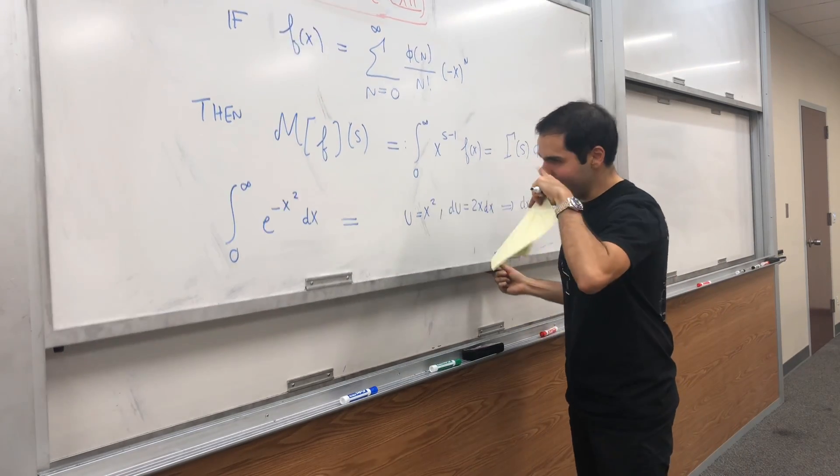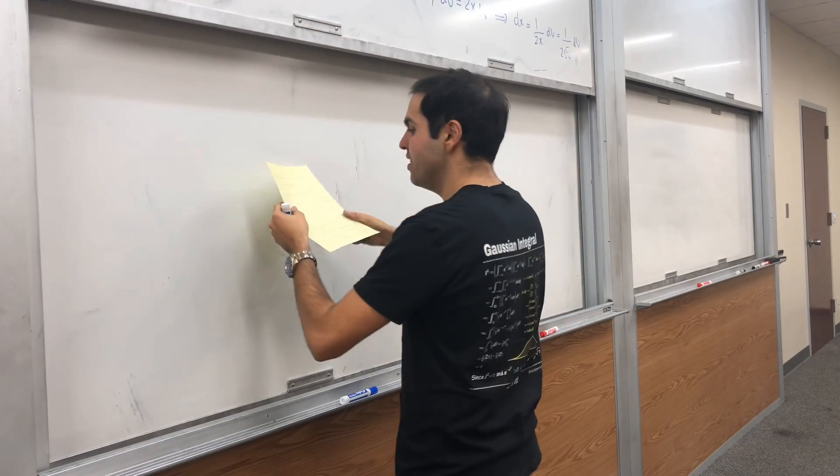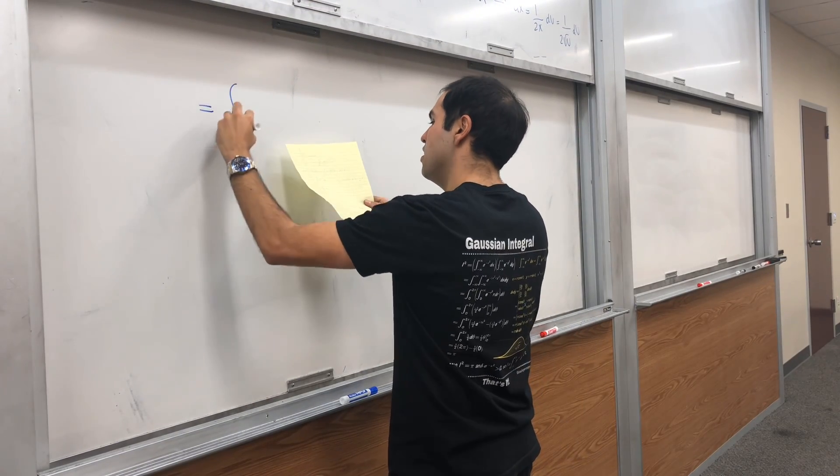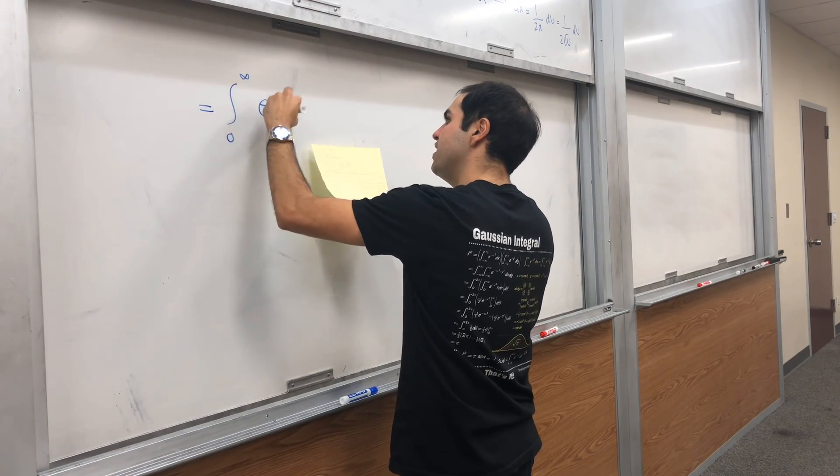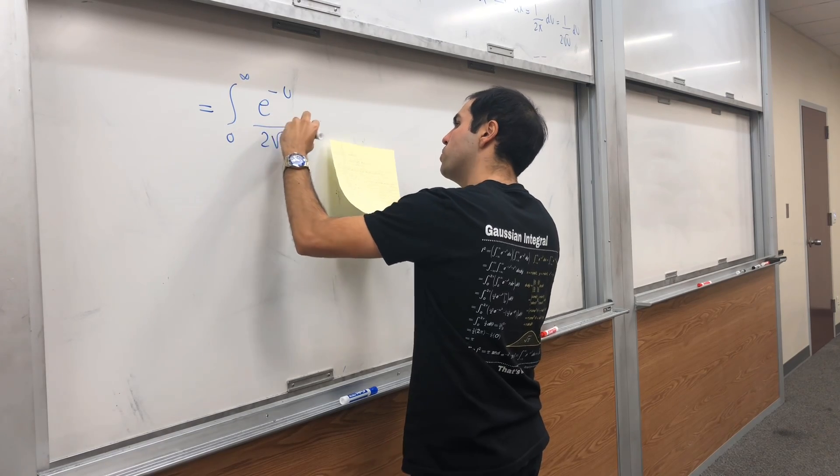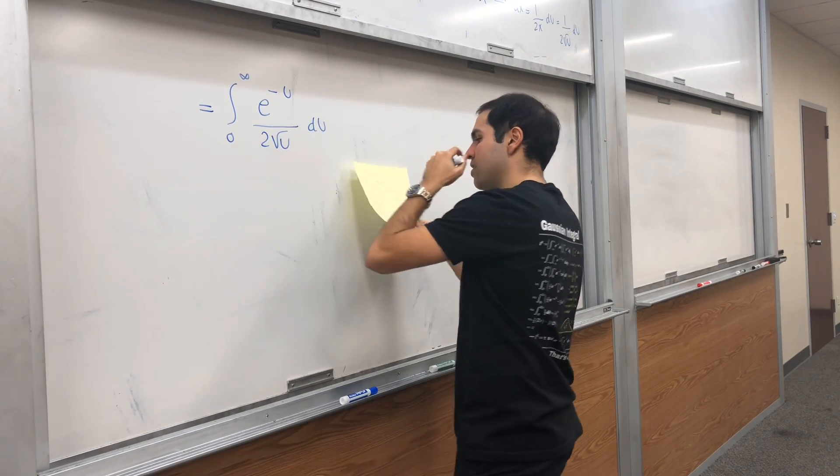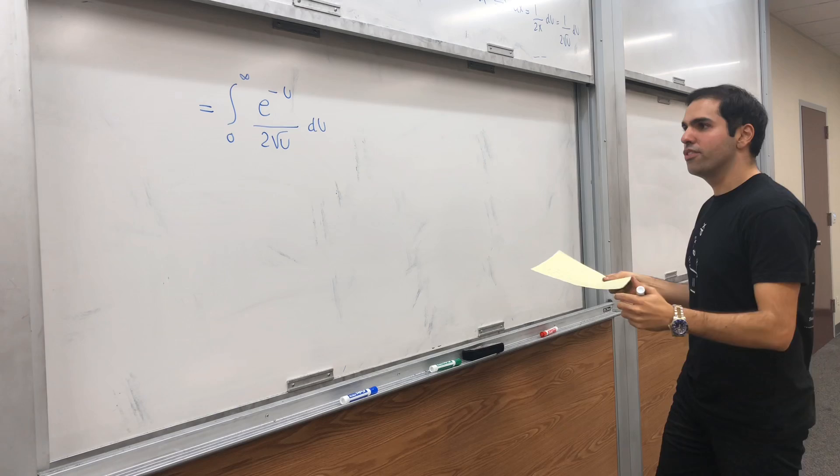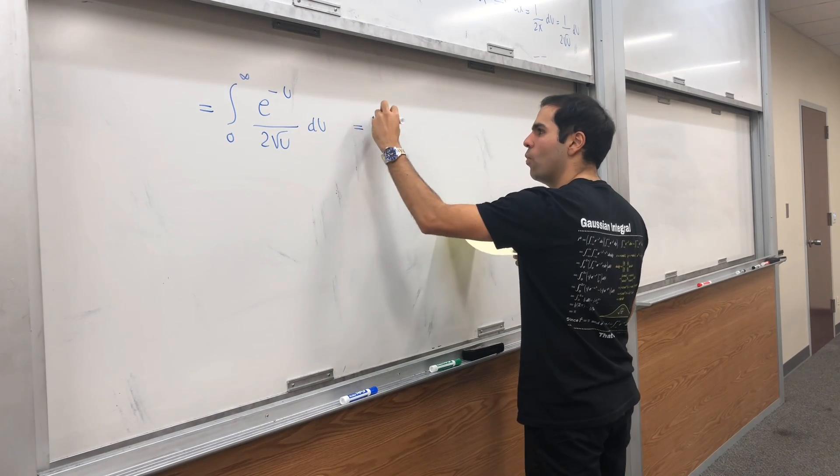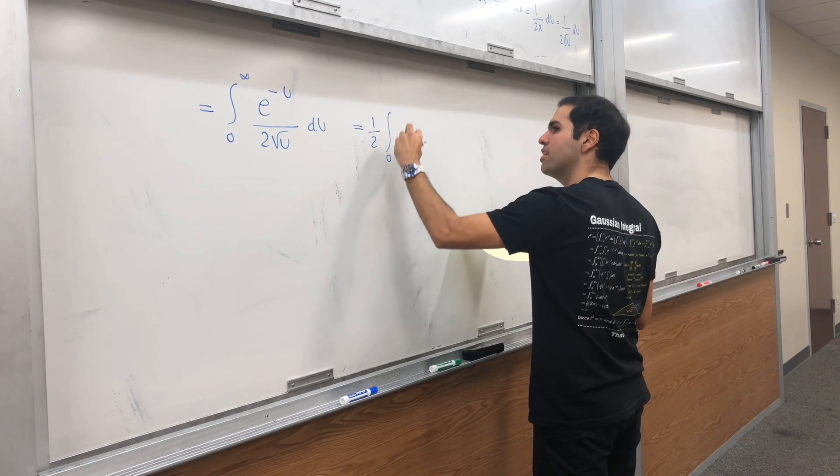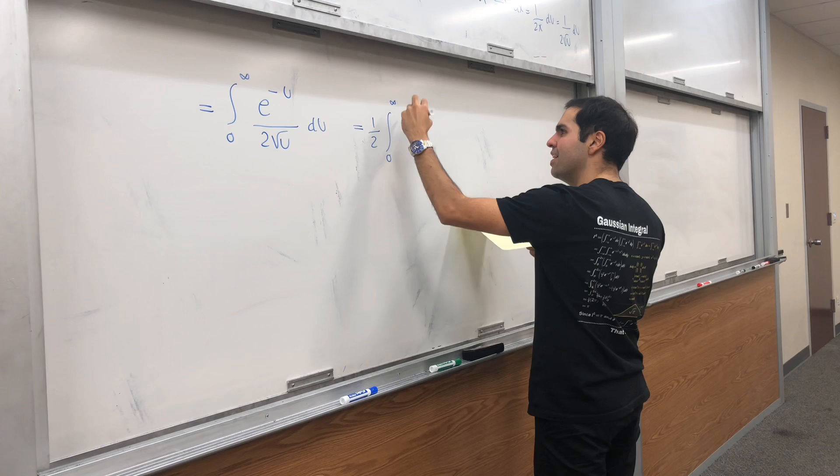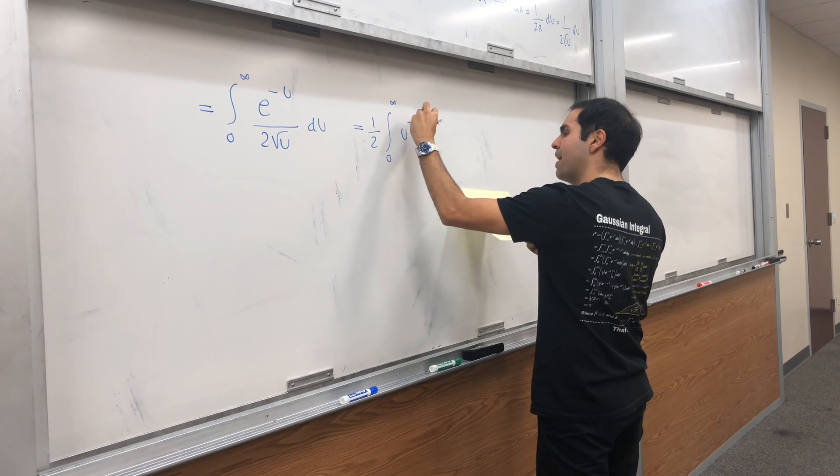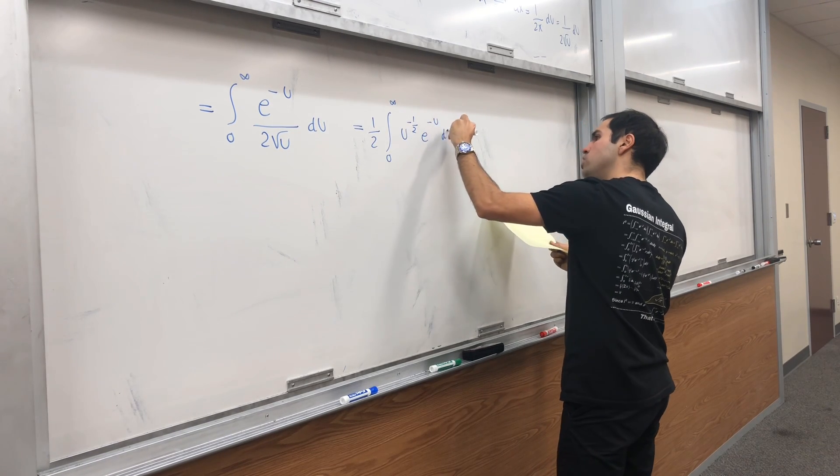Then that integral becomes integral from 0 to infinity, e to the minus u over 2 square root of u du, which becomes one half times the integral from 0 to infinity u to the minus one half e to the minus u du.